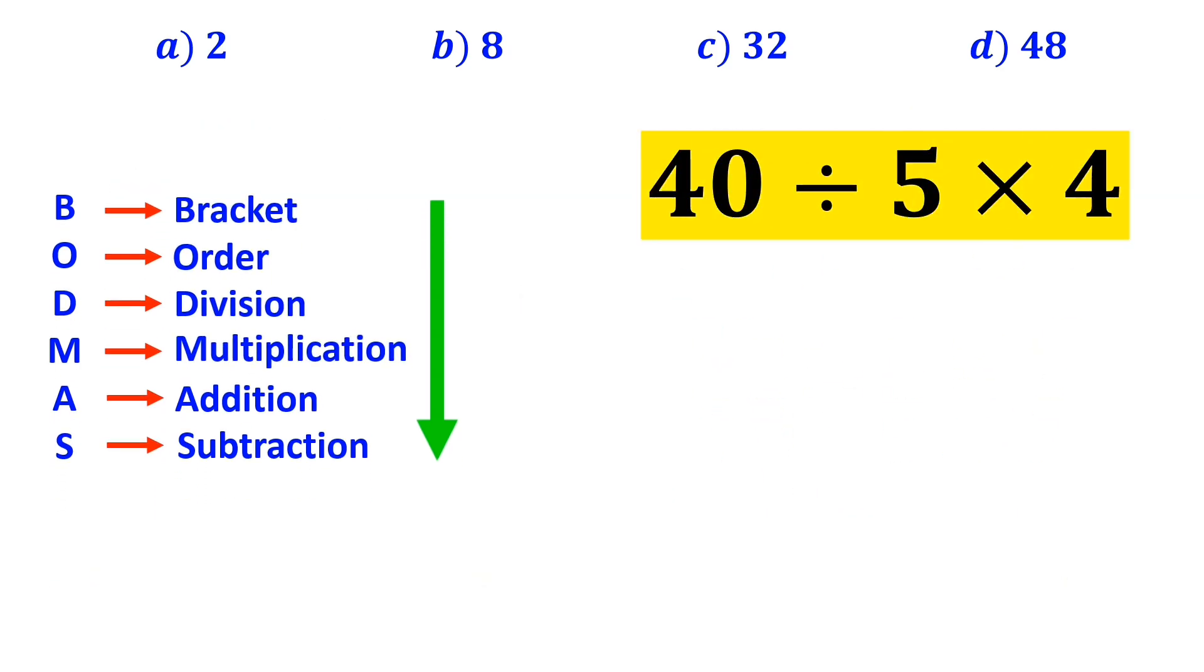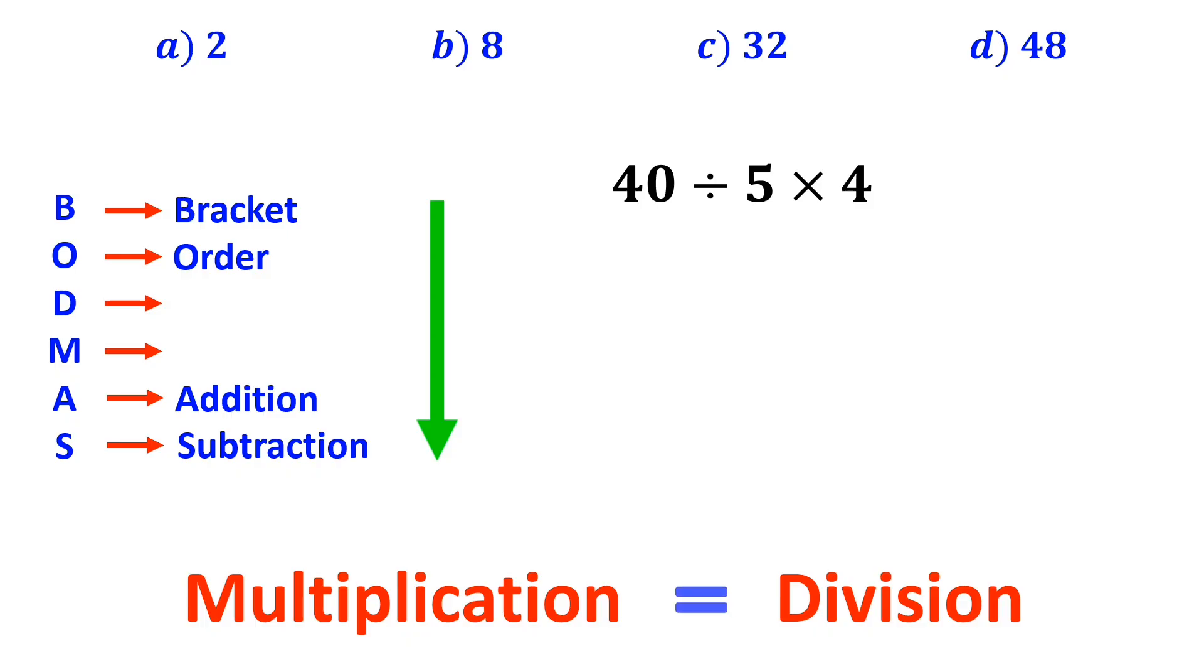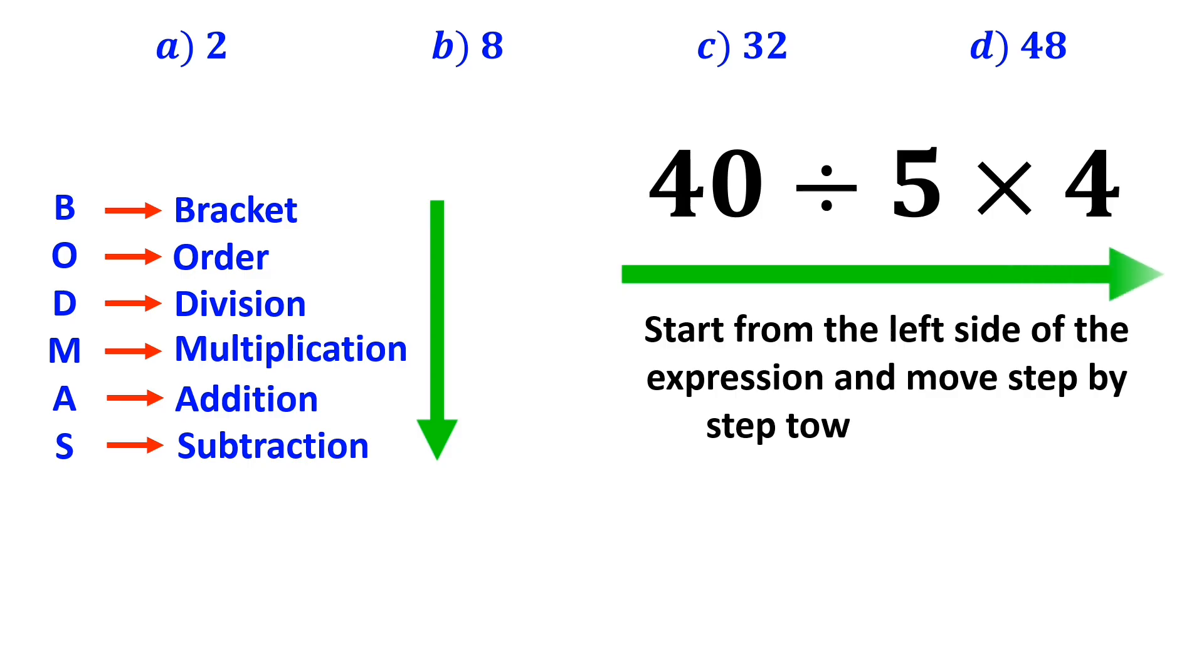Now it's time to simplify this expression. It's very important to note that in the BODMAS rule, multiplication and division have exactly the same level of priority. In this case, all we need to do is to start from the left side of the expression and move step by step toward the right.